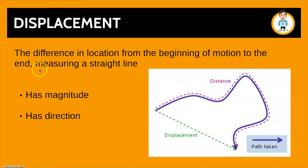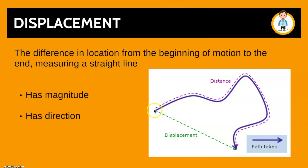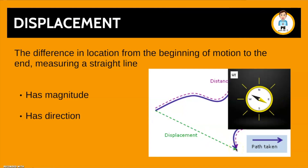A very similar concept is displacement, which is the difference in location from the beginning of the motion to the end, measured in a straight line — that is key. Displacement has both magnitude and direction. Using the same graph, our displacement is shown by the green dotted line. So if the purple path is 100 metres in distance, our displacement might be just 50 metres south east.